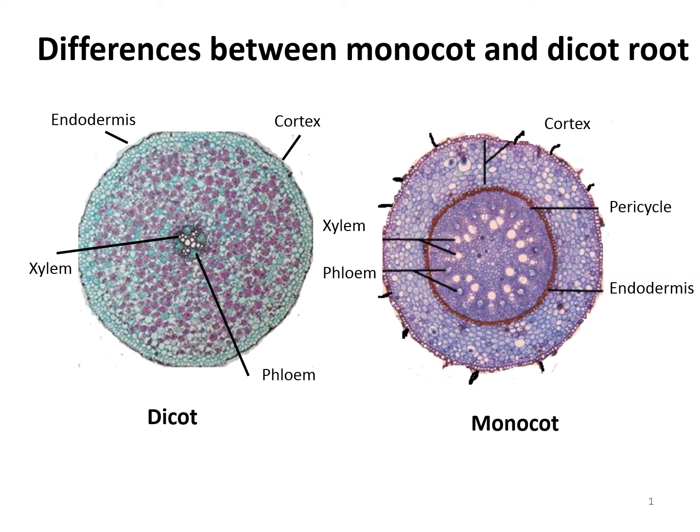In part one of this lecture we discussed in detail about the internal structure of monocot and dicot roots. In this part we will discuss the differences between monocot and dicot roots regarding xylem bundles.